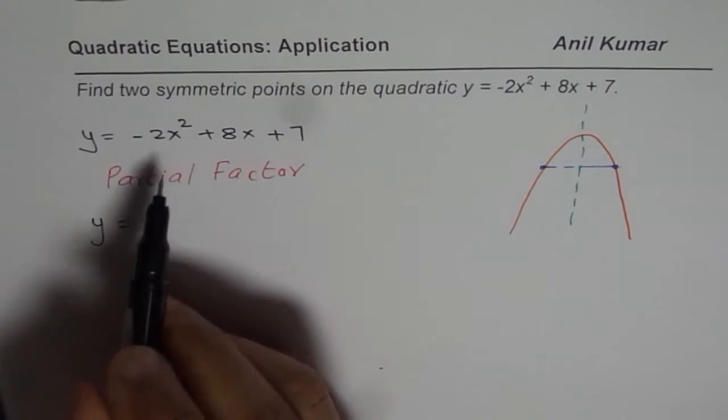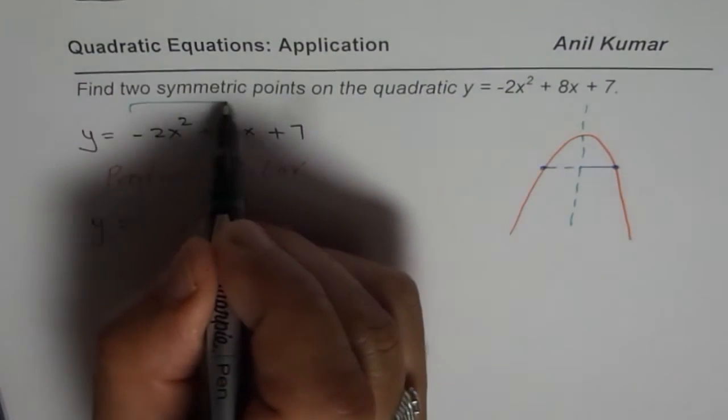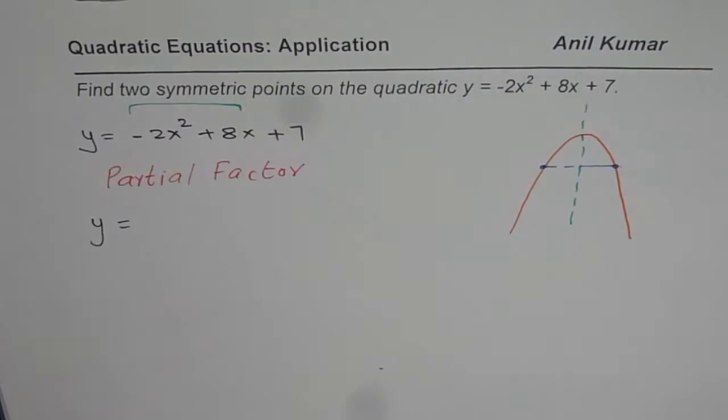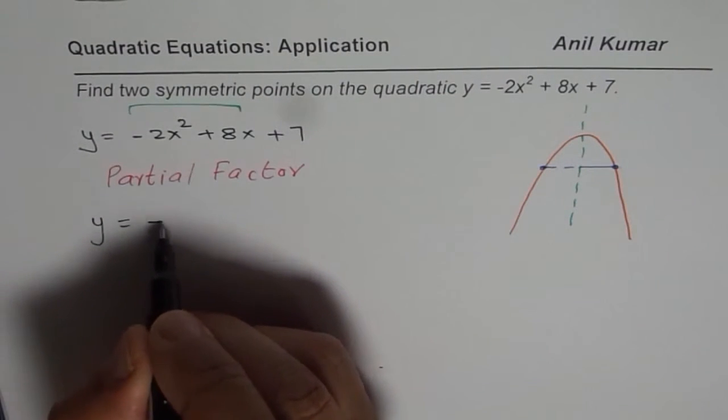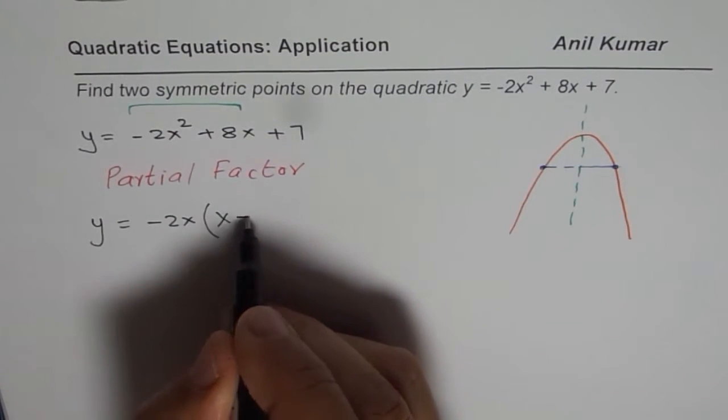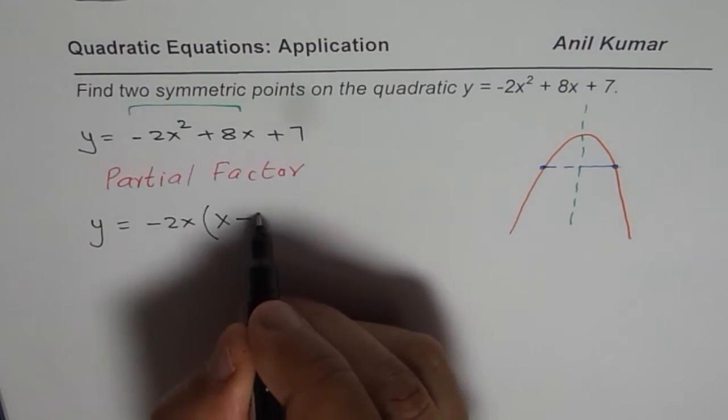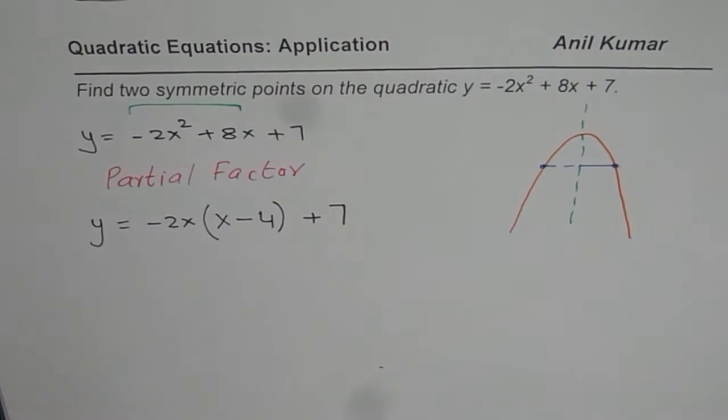So we have y equals... We'll just consider the first two terms and factor whatever is common. So we can factor -2x, right? So -2x. So you're left with x minus 8 divided by 2 is 4, plus 7.